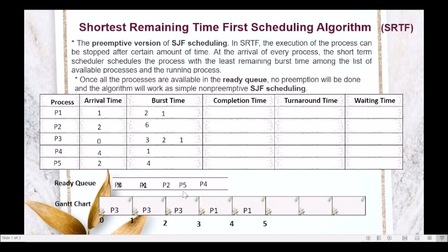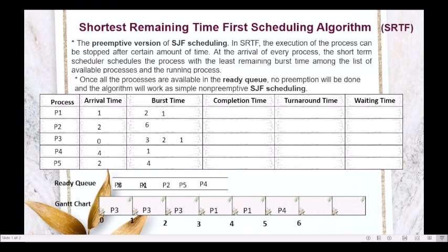The ready queue now has P2, P5, and P4. Comparing burst times: P2 is 6, P5 is 4, P4 is 1. P4 has the smallest burst time of 1, so we allocate the CPU to P4. In the Gantt chart, P4 executes from 5 to 6. P4 is done with its execution.